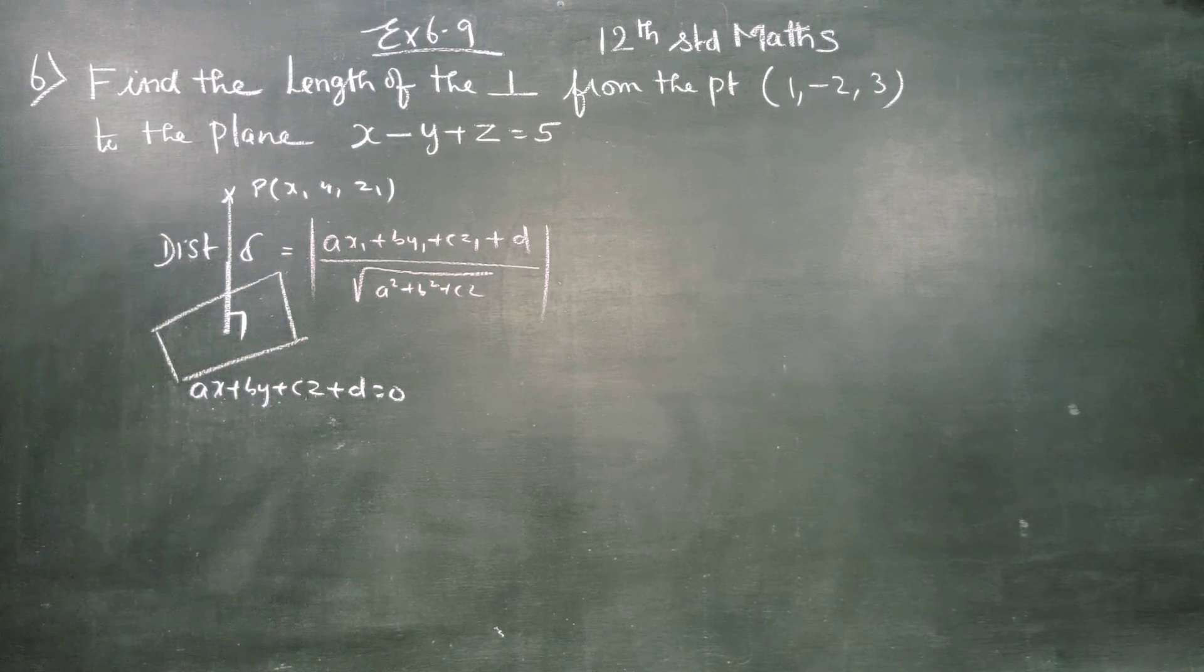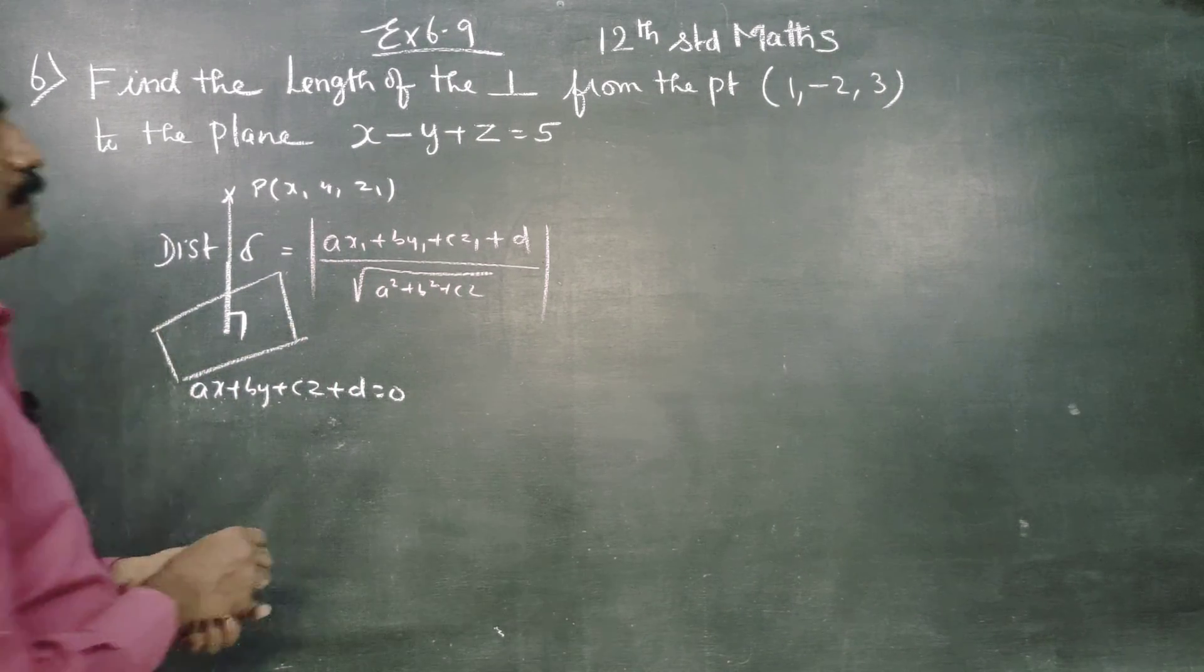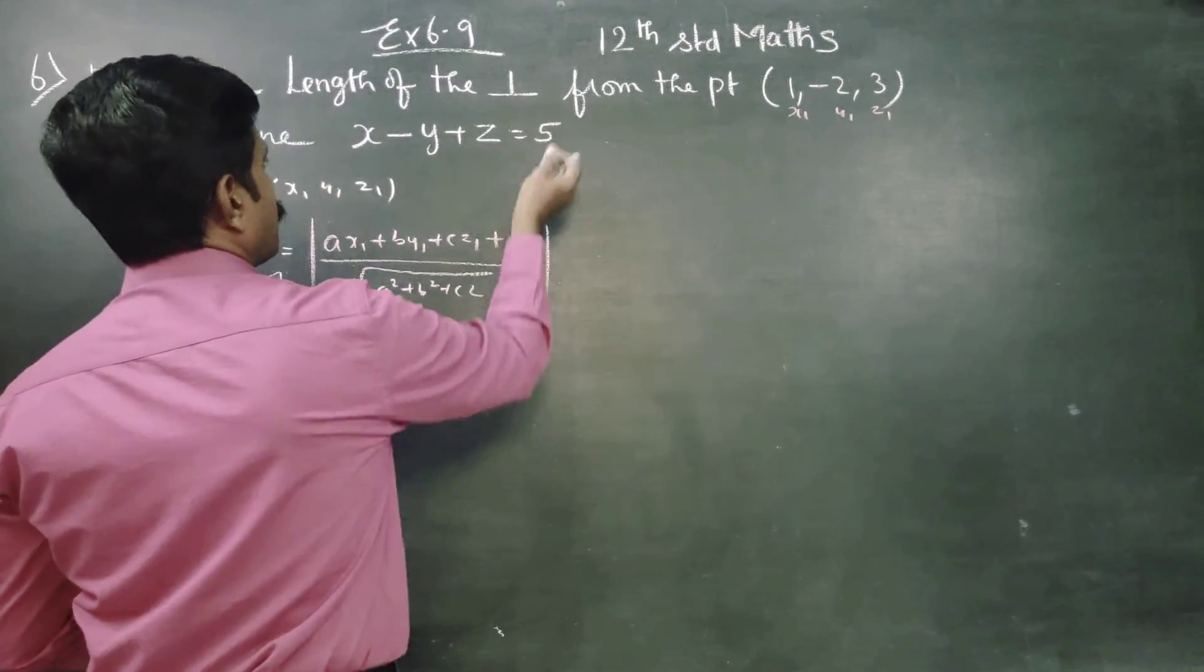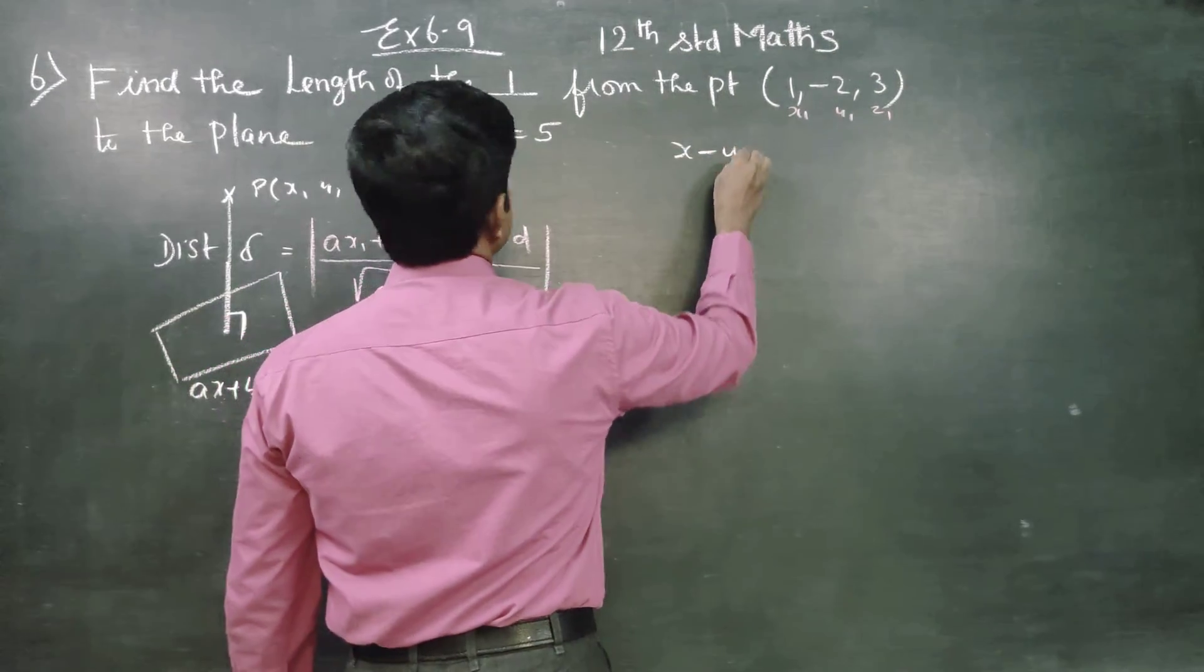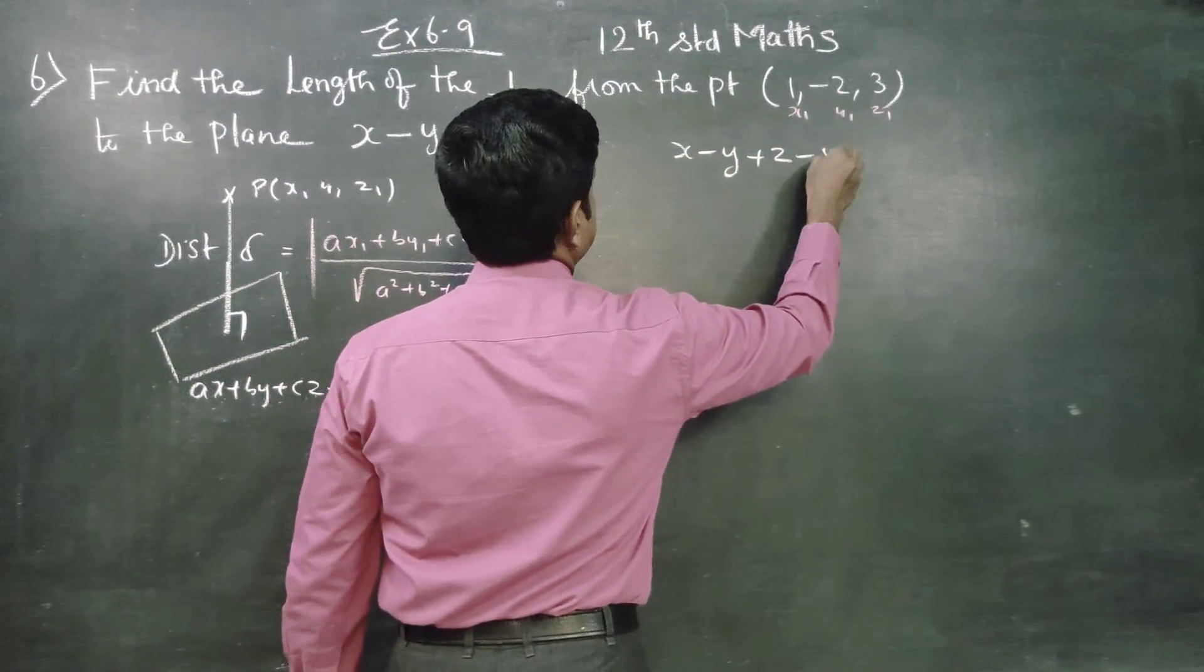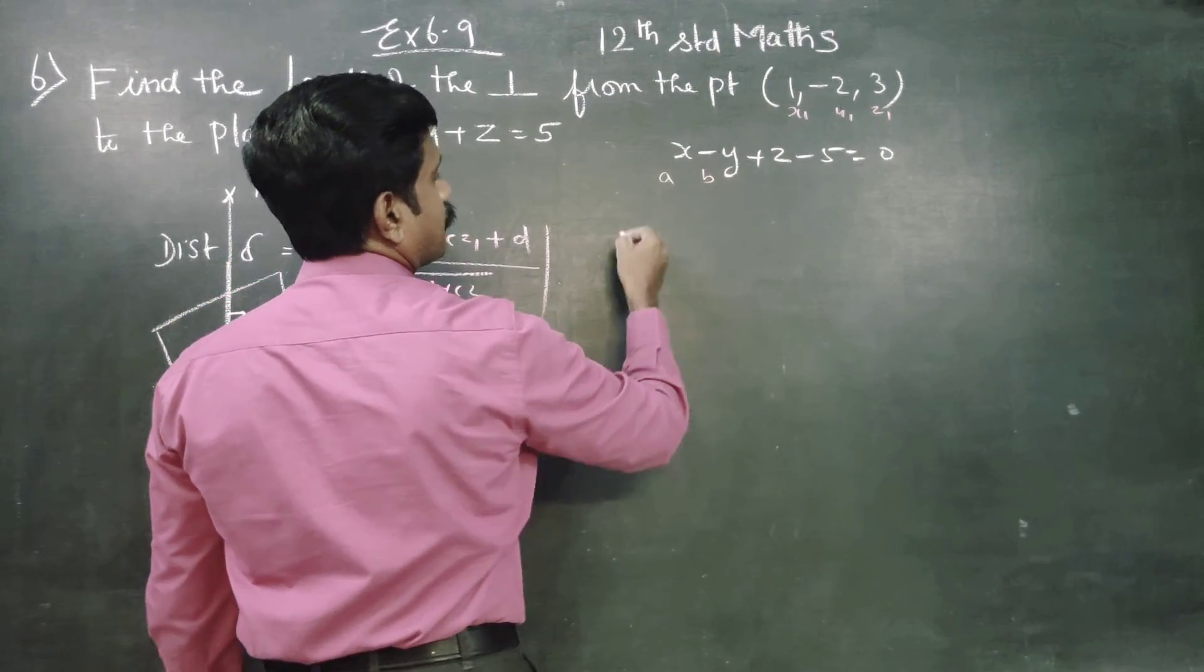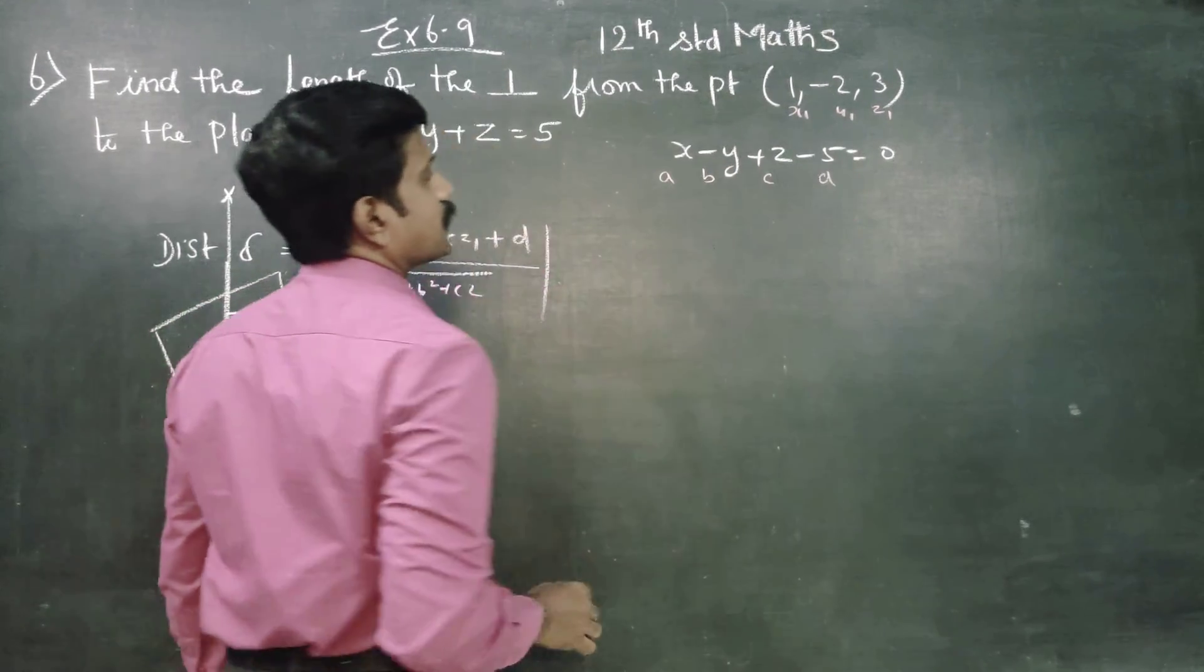Now we have to take x1, y1, z1. We have to take the plane x - y + z - 5 = 0. Then a is 1, b is -1, c is 1, d is -5.